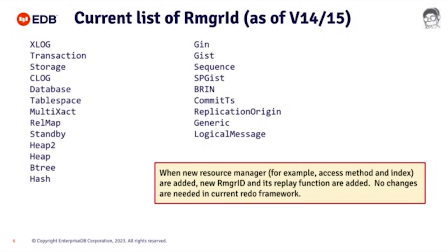This is the list of resource manager IDs at present — as of version 14 and version 15. Maybe we need to add some in version 16, but I hope not. Because these are very well abstracted, if we add a new resource manager there will be no significant change in the recovery call path at all.